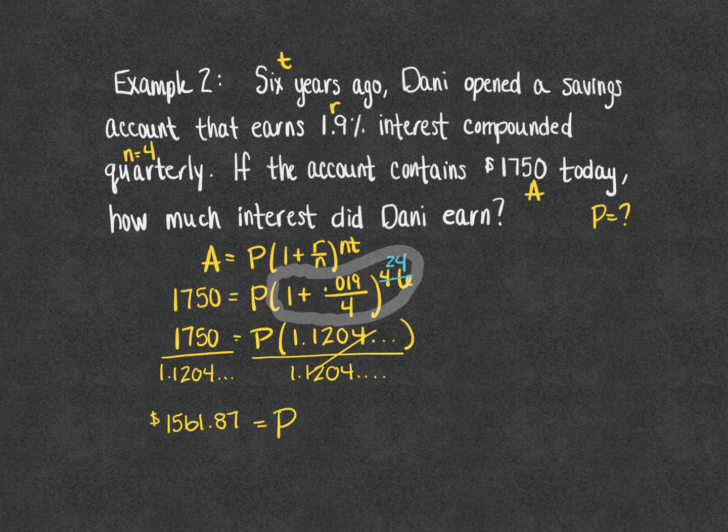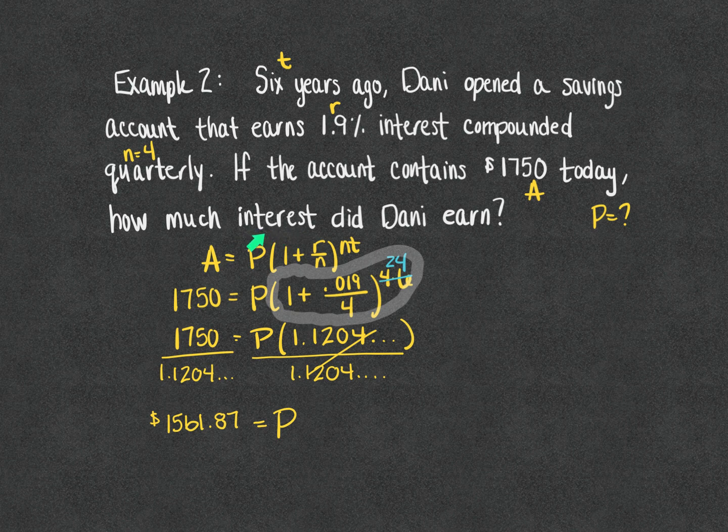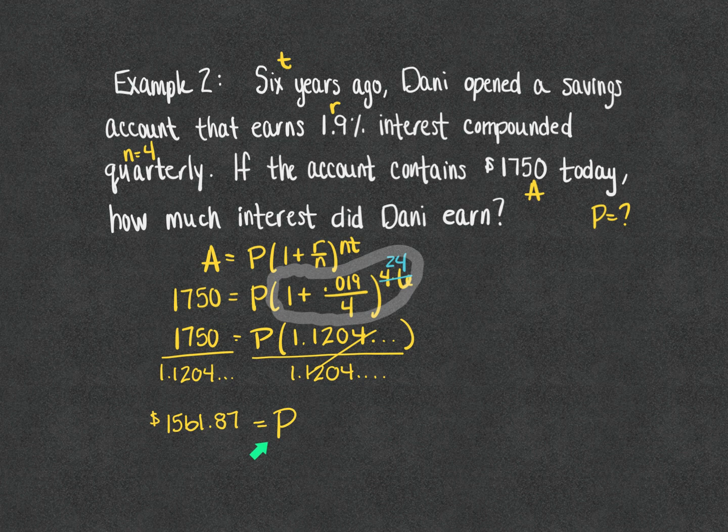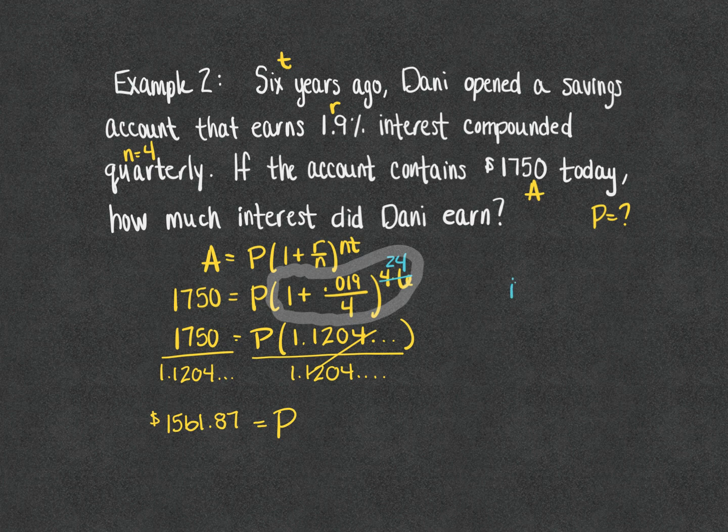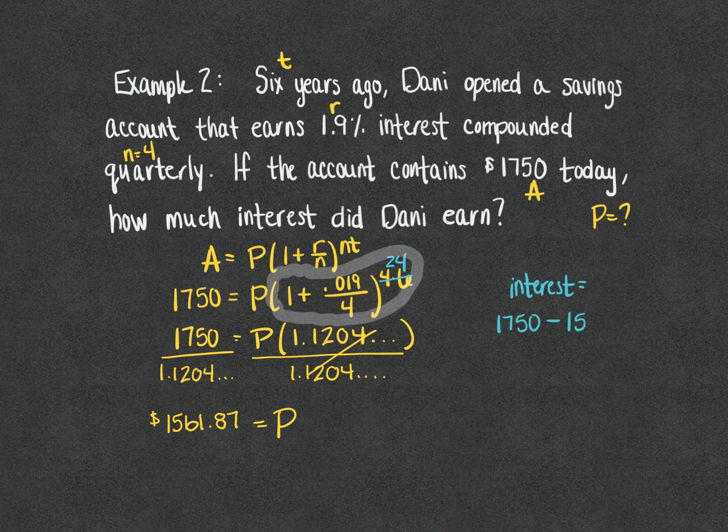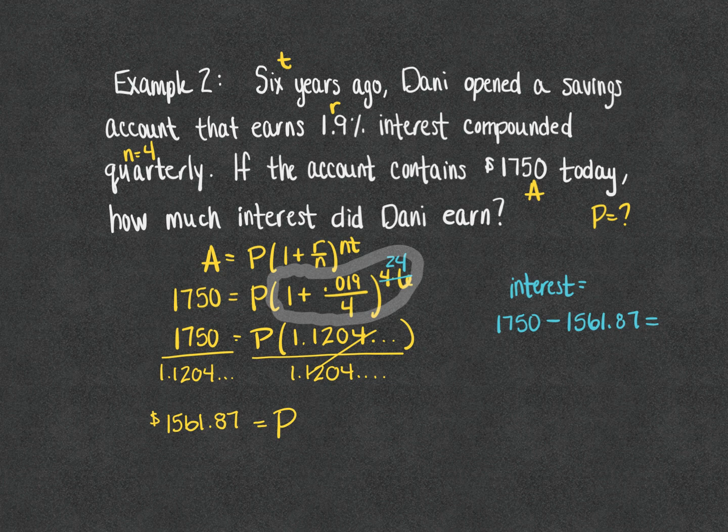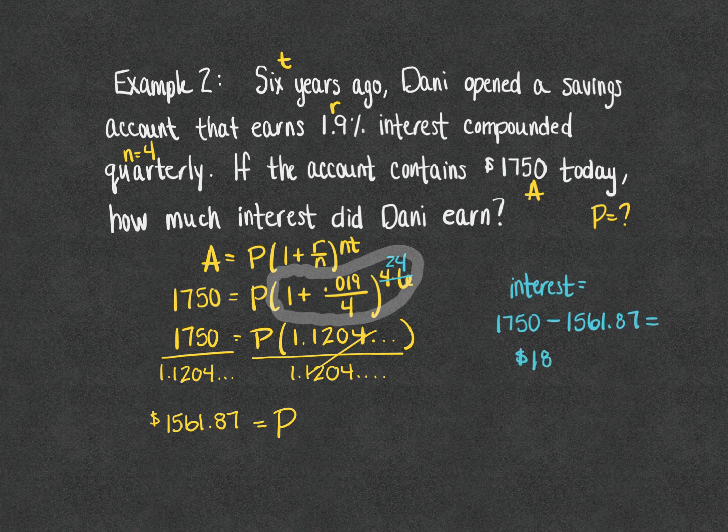Now, the question is how much interest did Dani earn? We did not just find the interest, we found the principal, we found her starting amount. So if we want to figure out how much interest was earned, then we need to take the final amount in the account, the $1,750, and subtract the $1,561.87 that we just figured out she started with. And we will find out that the amount of interest earned is $188.13.